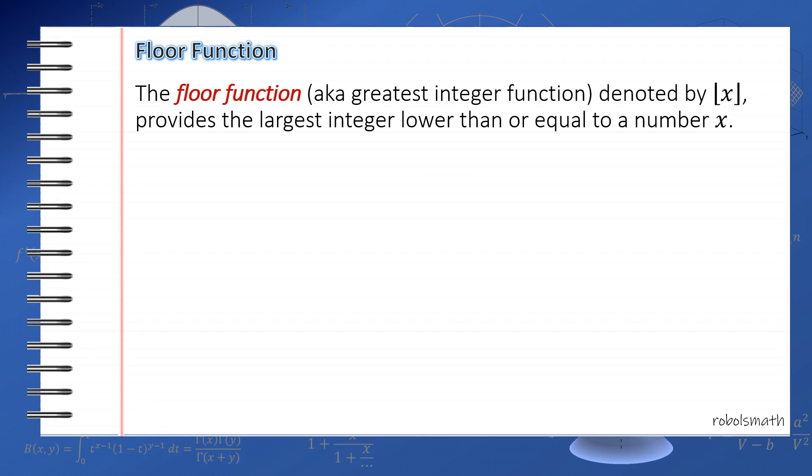For the floor function, this is also known as the greatest integer function, and the function provides the largest integer lower than or equal to a number x. In simplest terms, it will round down the number. For example, if you have 1.43 and you get the floor of that, you'll get 1. Essentially, you round 1.43 down to 1, being the closest integer, the largest integer lower than 1.43.